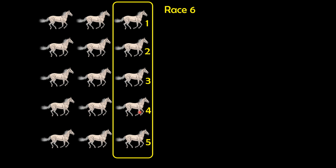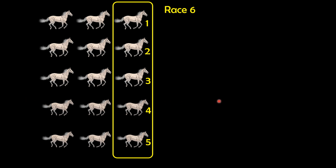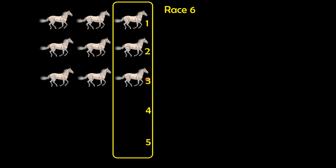The horses that came fourth and fifth in race six are of no interest. Their group's second and third place finishers can only place fifth and sixth at best, so the last two rows are directly eliminated. In the third row, the group winner came third in race six, so the next horse in that row can only come fourth and the one after can only come fifth — we eliminate those two as well.